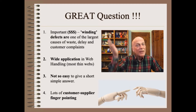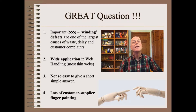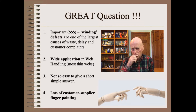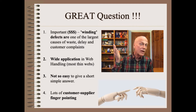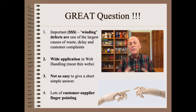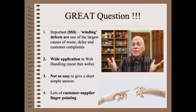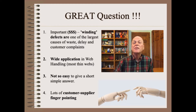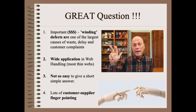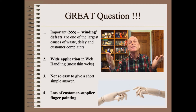This is a great question, as are all clips in this series. What makes a great question, you ask? First, winding defects of all types — and there are more than 100 types — are usually in the top three causes of waste, delay, and customer complaints in most plants.